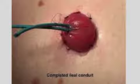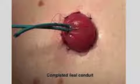Two tubes, or stents, will be inserted into the stoma and into the ureters to ensure that urine flow is not impeded by swelling. The stents will gradually migrate out on their own in most circumstances.